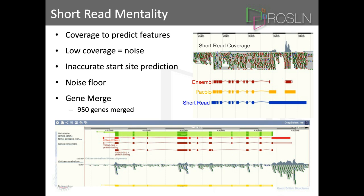How about 3' end degradation — what can you do about that? The solution in all kits is they use the dT primer looking for the poly-A tail, which selects for full-length transcripts. If there's a poly-A stretch internally, the dT primer could bind internally. With TAMA collapse, it gives you a file of all possible candidates that had internal truncation or internal priming, so you can see if a model is truncated on the 3' end. TAMA collapse gives you lots of quality control outputs on your dataset.